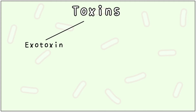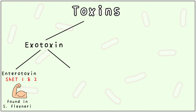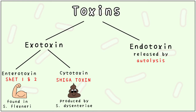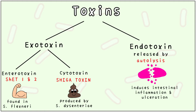Shigella produces two types of exotoxins: enterotoxin, called Shigella enterotoxin type 1 and type 2, found predominantly in S. flexneri. It also produces a cytotoxin called Shiga toxin, produced by S. dysenteriae. Shigella also possesses an endotoxin, which is released by autolysis. This primarily causes intestinal inflammation and ulceration.